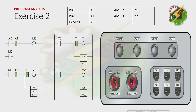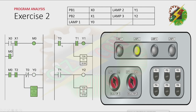This will be my answer to this exercise. Let's have our analysis for this program. By pressing PB1, M0 will turn on, and because M0 is on, it will not turn off unless we press PB2. And because M0 here is on, and T2 here is on, and T0 here is on, that will make Y0 to turn on. And timer 0 will turn on after 1 second. Then because timer 0 is now on and this contact is on here, that will make Y1 to turn on. And timer 1 will turn on after 1 second.